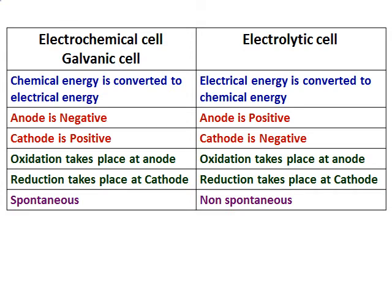Before we proceed further, let us understand the difference between an electrochemical cell and an electrolytic cell. The electrochemical cell, which is also called the galvanic cell, converts chemical energy into electrical energy — in other words, electrical energy is produced because of a chemical reaction. Whereas in an electrolytic cell, electrical energy is converted into chemical energy.